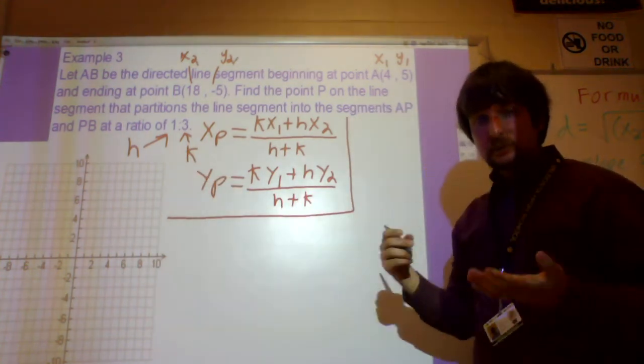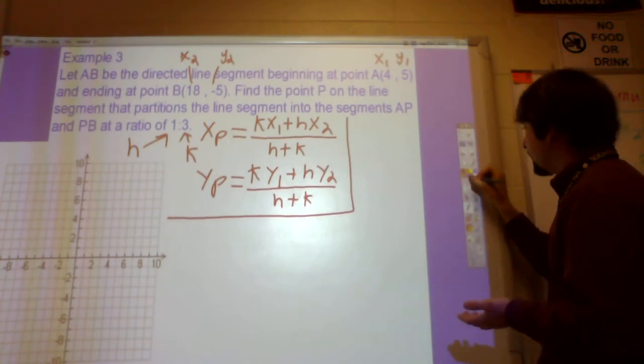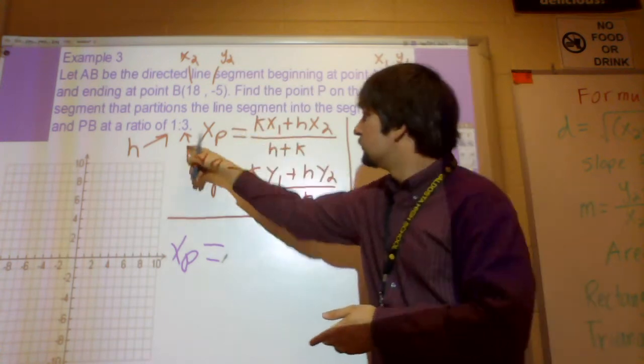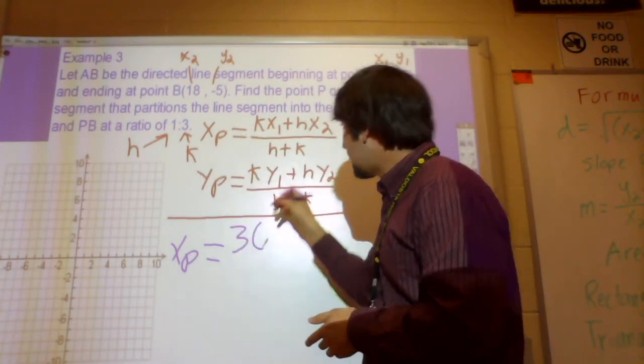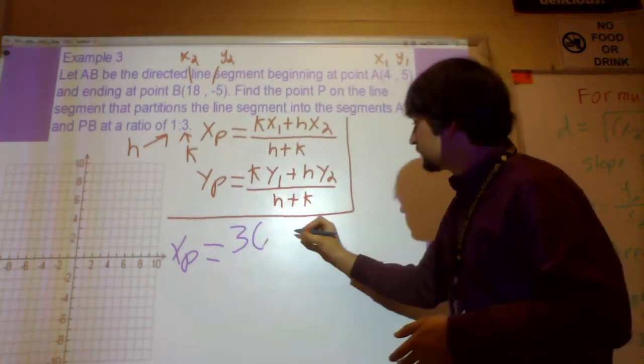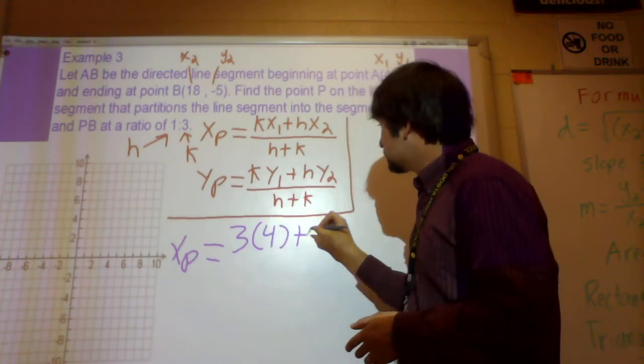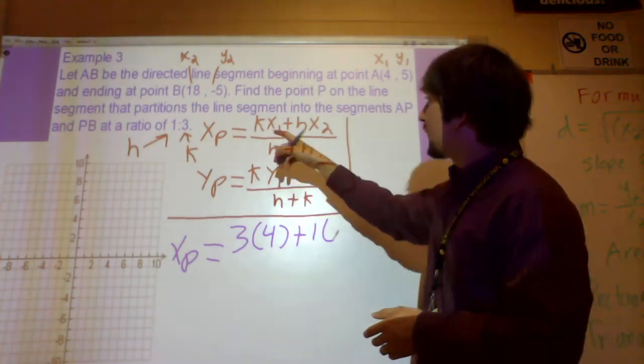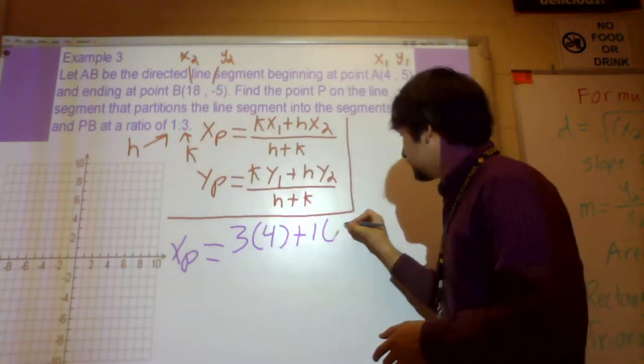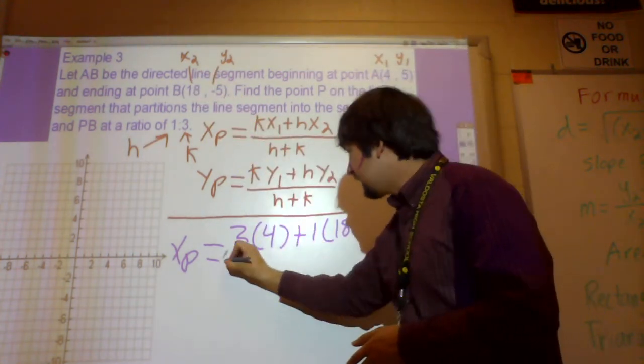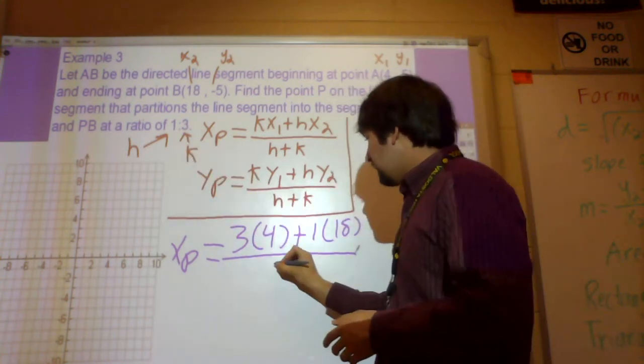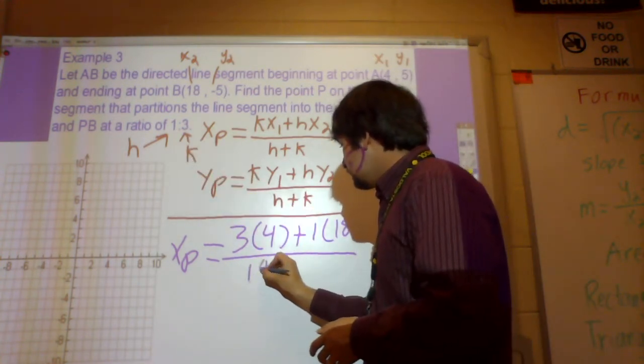So let me just go ahead and show you. If you were going to find the X part, so XP, this is what you would do. You would just take your K, which is 3, so that's going to be 3 times X1, 4. You would just do 4, plus, then you would take the H, which is 1, and multiply it by X2, so it's 18. Divided by H plus K, so you just add those things together. 1 plus 3.